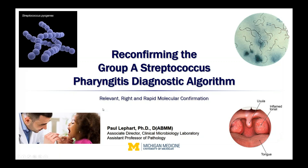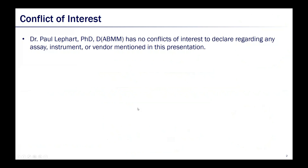Good afternoon, everybody. Hopefully you're able to see the presentation here. Thank you, Candice, for that kind introduction, and thank you to Luminex for the opportunity to give this talk today on reconfirming the Group A Streptococcus Pharyngitis Diagnostic Algorithm with relevant, right, and rapid molecular confirmation. We'll start off today with an obligatory conflict of interest slide. I have no conflicts of interest to declare regarding any assay, instrument, or vendor mentioned in this presentation.